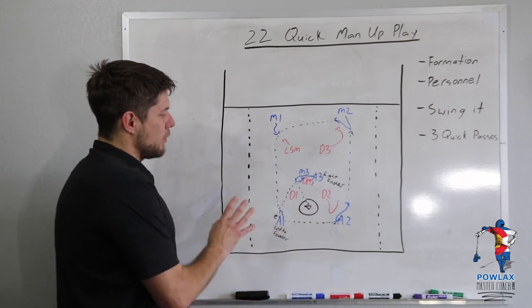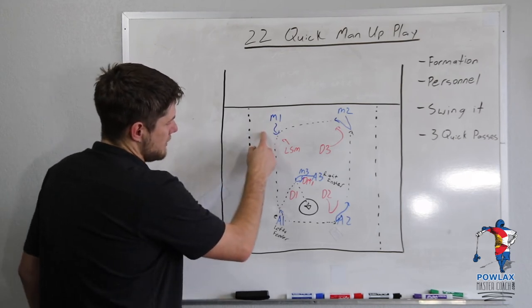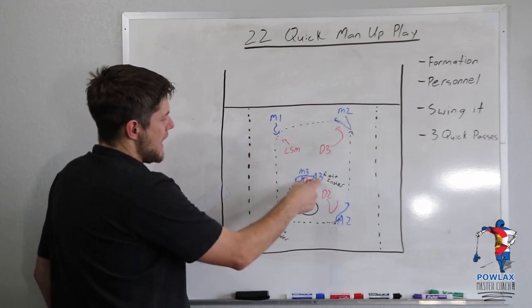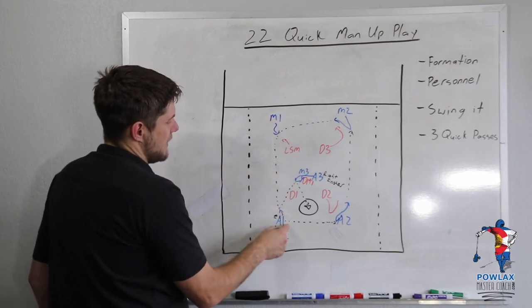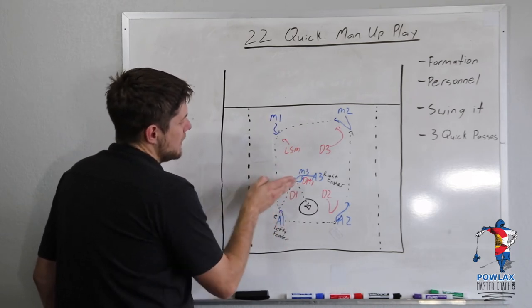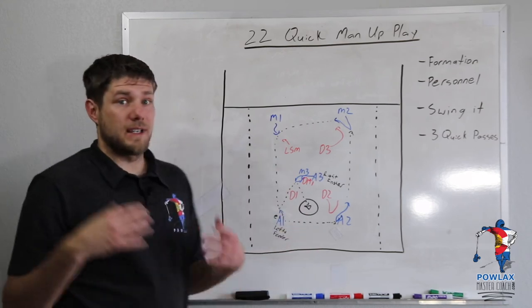And the most important thing is that as the ball is coming down here, A3 has started his cut and the seal is made. So that right as the lefty catches it, he can throw it inside to A3 and A3 can get a good shot off.